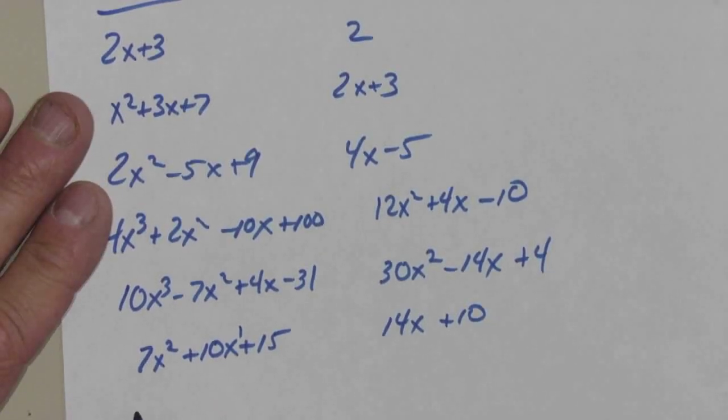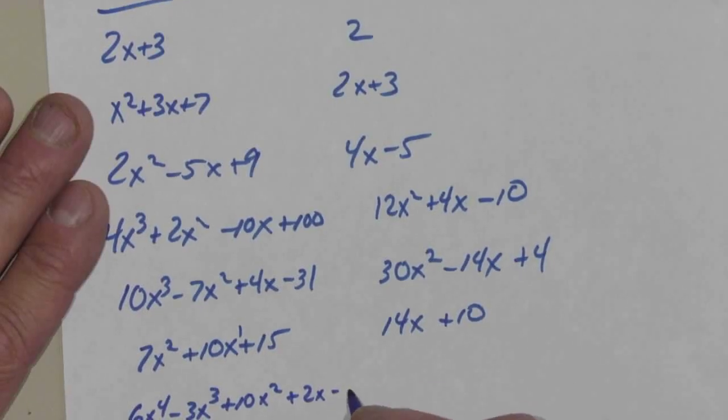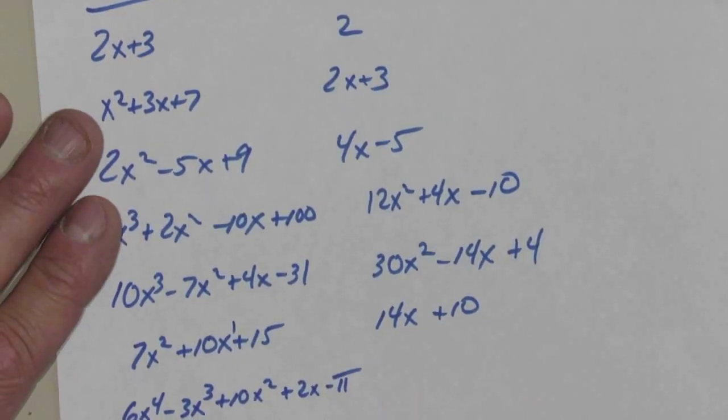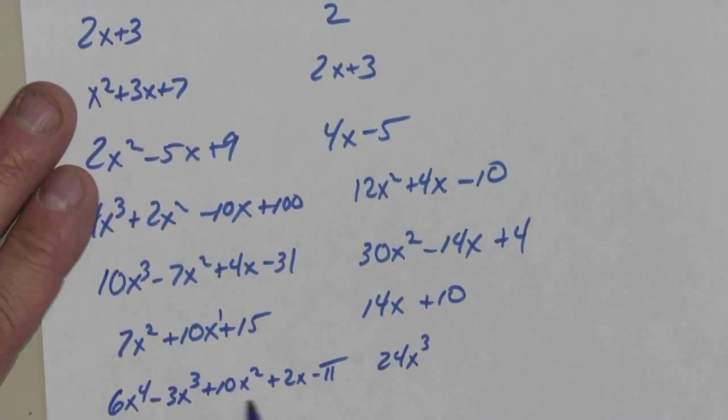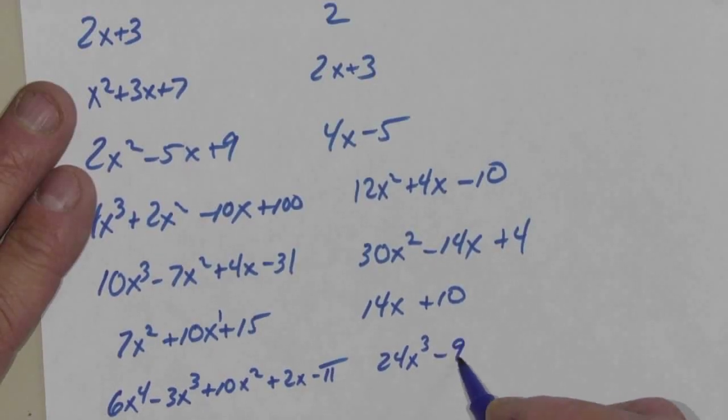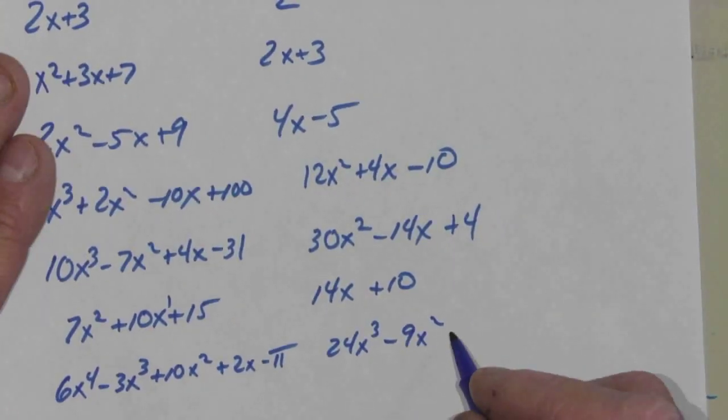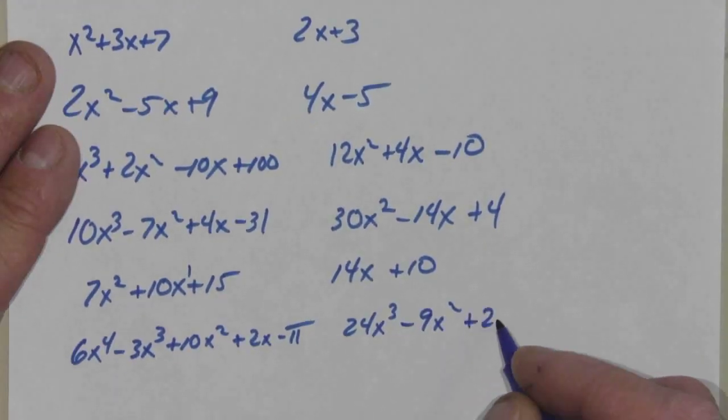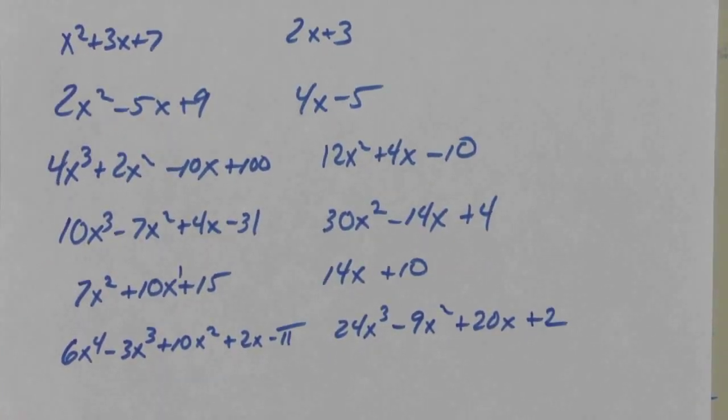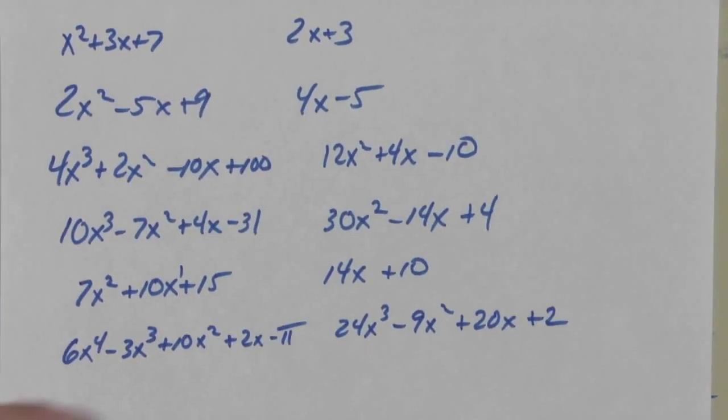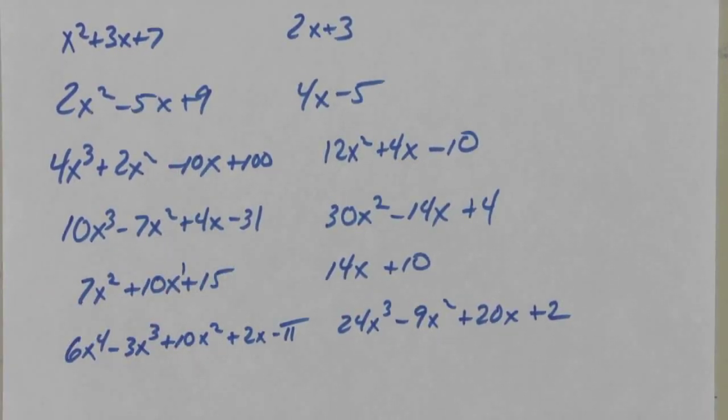So let's do another one. Six x to the fourth minus three x to the third plus 10x squared plus two x minus pi. What's my first term of my derivative? 24x to the third minus nine x squared plus 20x plus two. But what happens to the pi? It's gone because pi is not a variable. It's a number just like 15 is a number.